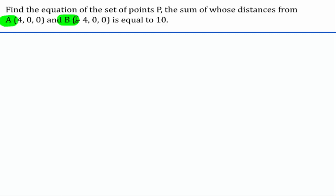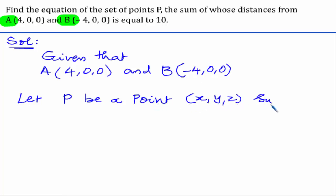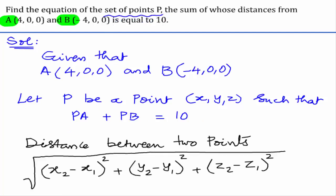In this question, we are given two points A and B and need to find the equation of the set of points P such that the sum of distances from A and B equals 10. The two given points are A as (4, 0, 0) and B as (-4, 0, 0). Let P be a point with coordinates (x, y, z) such that PA plus PB equals 10.